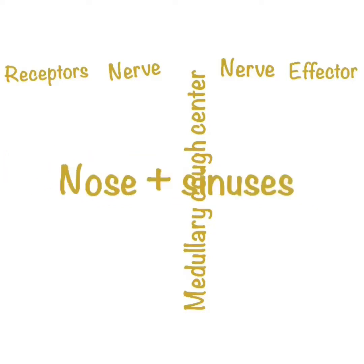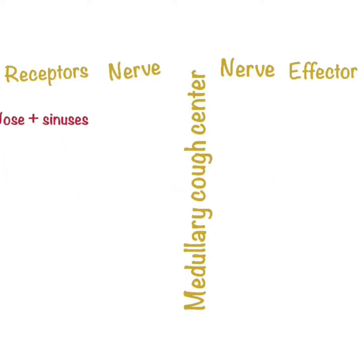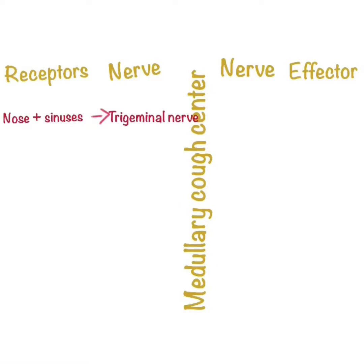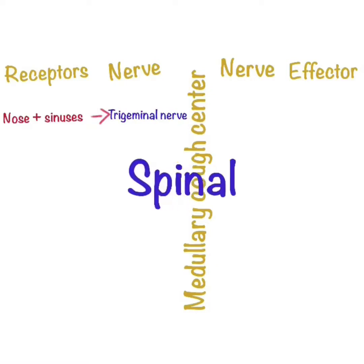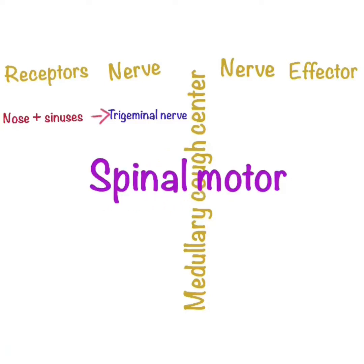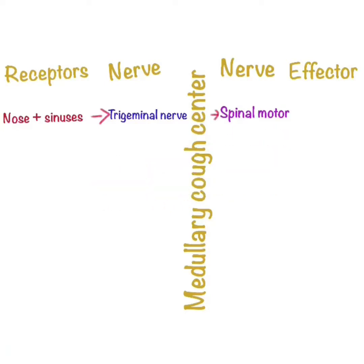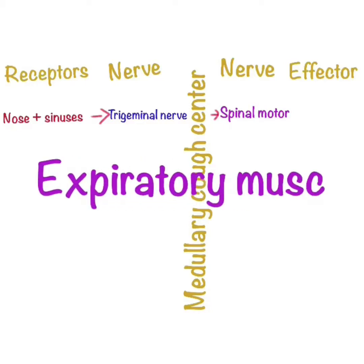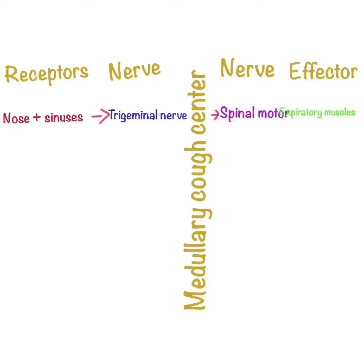The first sensory receptor is the nose or sinuses. When there is any stimulus in the nose or sinuses, it travels through the trigeminal nerve, which is the fifth cranial nerve, to the medullary cough center in the medulla. A response is generated there, and through the spinal motor nerve, it goes to the effector, which is the expiratory muscles. The expiratory muscles contract and as a result, cough is produced and any obstruction or irritant is expelled out.